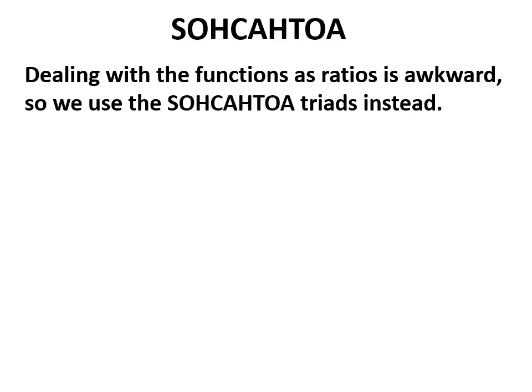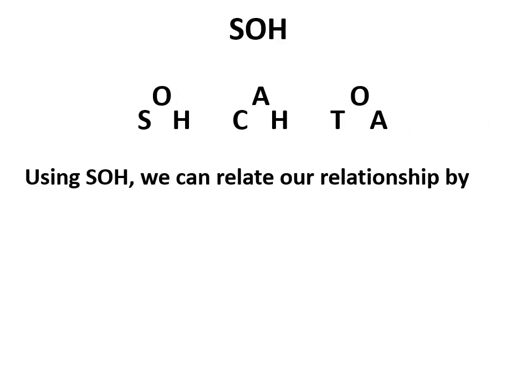Instead, we have a mnemonic that makes it a lot easier so we don't have to use any algebra. This mnemonic is SOHCAHTOA, best written with the letters in sets of three, with the one in the middle raised above the other two. We can then use that to determine our relationship for any triangle.